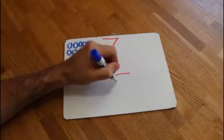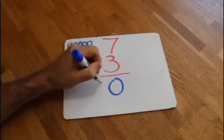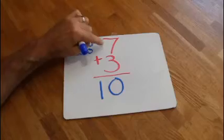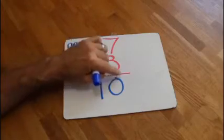So, straight down, we're going to put our zero for our ones here. Our 1 for our 10 next to it. 7 plus 3 equals 10.